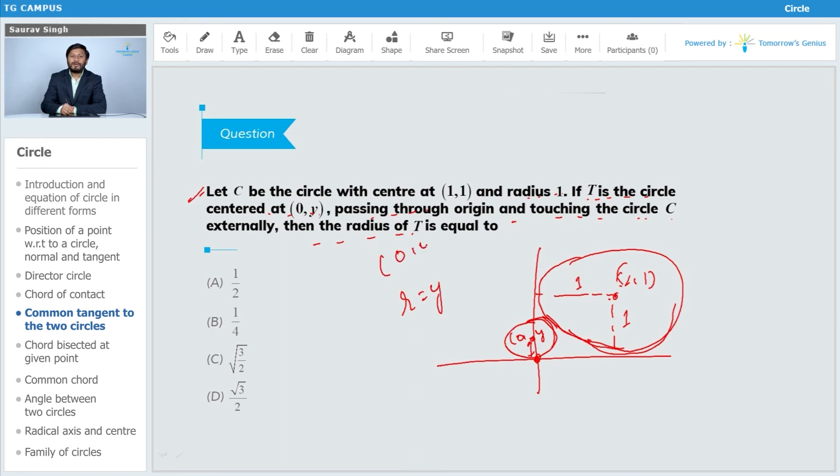0 comma y, and it is touching externally, means the distance C1C2 is equal to r1 plus r2. So C1C2 is what? 1 comma 1 and 0 comma y, so under root 1 square plus y minus 1 the whole square. r1 plus r2 is 1 plus r, so this should be equal to 1 plus r2 plus y.